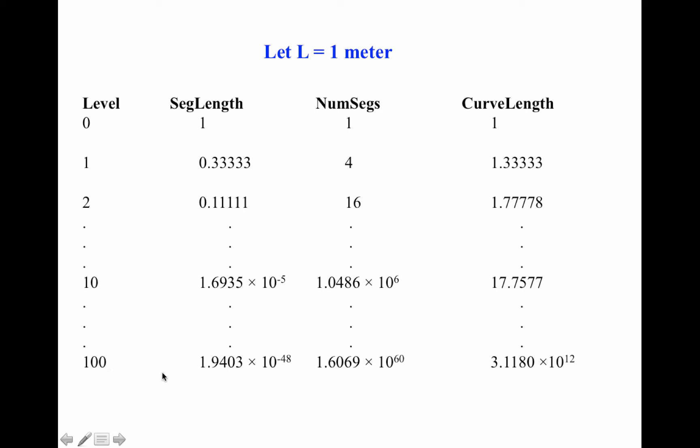So by level 100, while the segment length is extremely small, on the order of 10 to the minus 48 power, that's a decimal place followed by 48 zeros before we get to any non-zero digits. But the number of segments has gone up astronomically to the order of 10 to the 60.